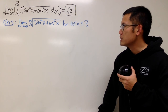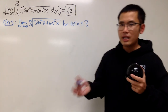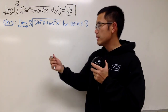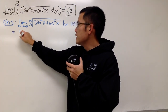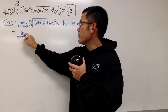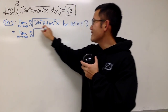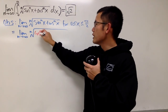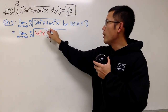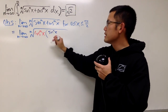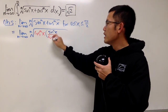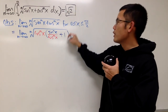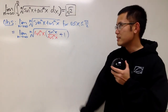Let's do some algebra. I'm going to factor out cos^n(x) and see what happens. We have the limit as n goes to infinity of the nth root of cos^n(x) times the quantity: sine^n(x) divided by cos^n(x), plus 1. We have a product inside, so we can take the nth root of each factor separately.